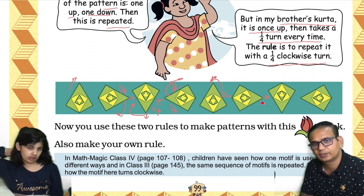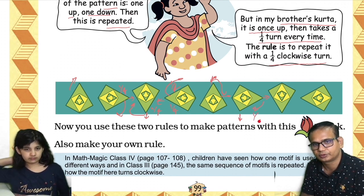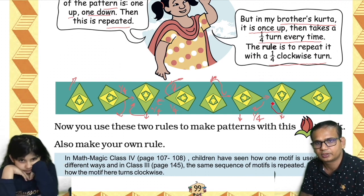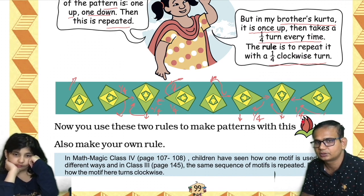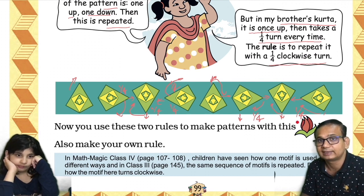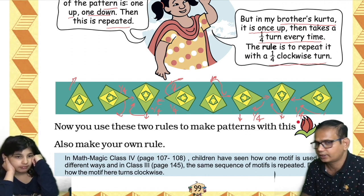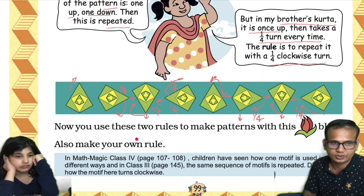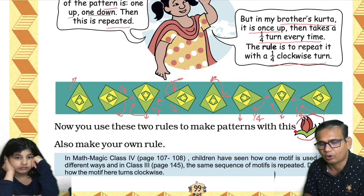So again it will be turned a quarter — this is one fourth turn — and then from here again it is turned one quarter. You see, one fourth turn right. That's what it is on our brother's kurta. Now you use these two rules to make patterns with this block.